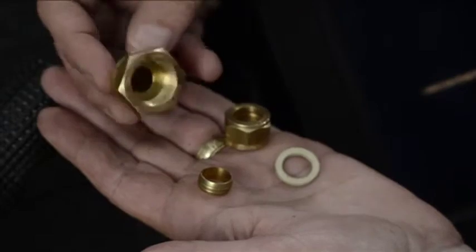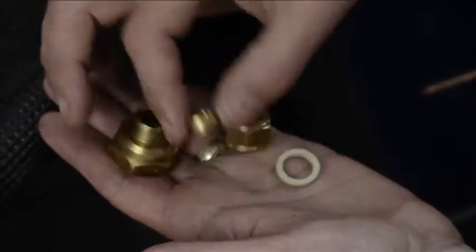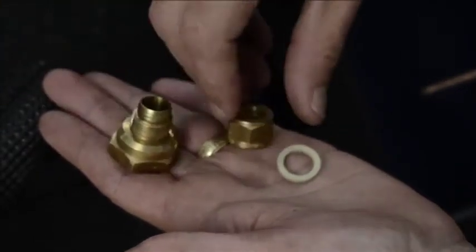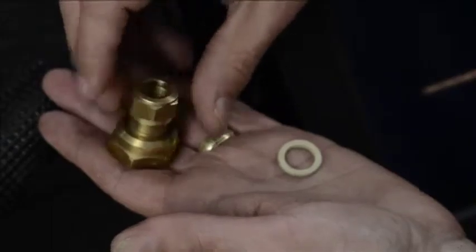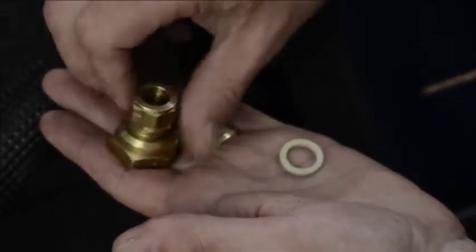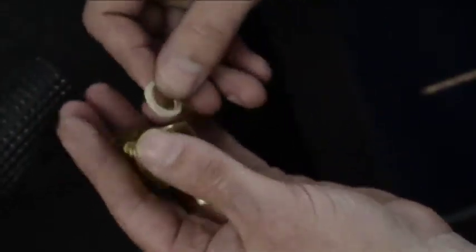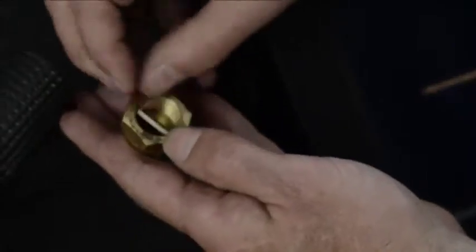So this is the collector connector fitting. We've got a ferrule and a nut on the plumbing side, and a washer on the collector side.